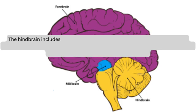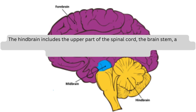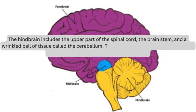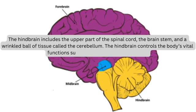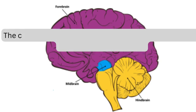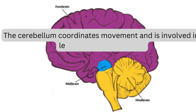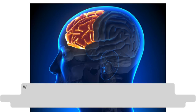The hindbrain includes the upper part of the spinal cord, the brain stem, and a wrinkled ball of tissue called the cerebellum. The hindbrain controls the body's vital functions such as respiration and heart rate. The cerebellum coordinates movement and is involved in learned rote movements. When you play the piano or hit a tennis ball, you are activating the cerebellum.